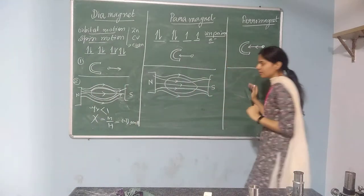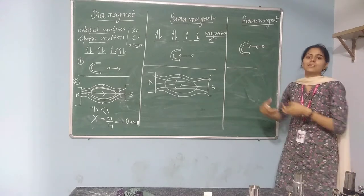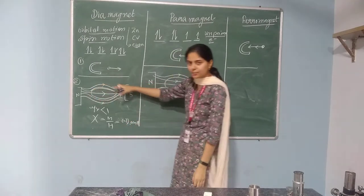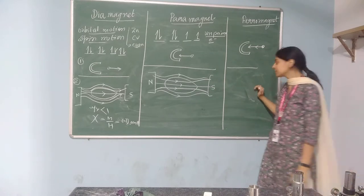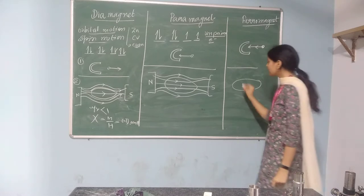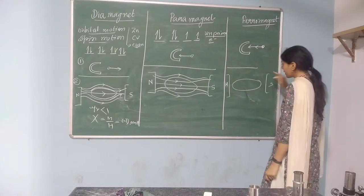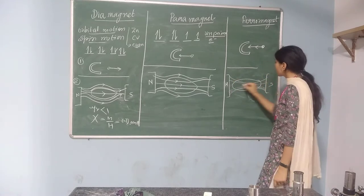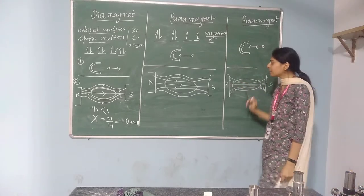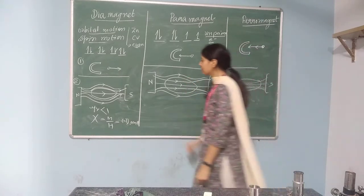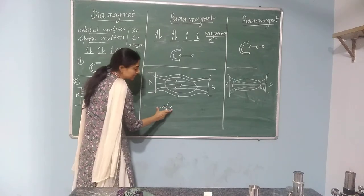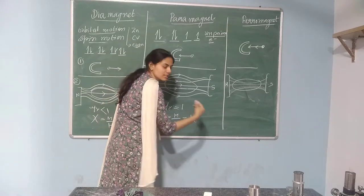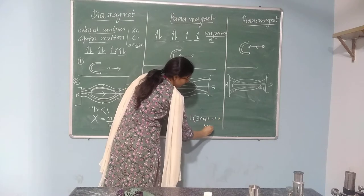In the ferromagnetic case, all the magnetic lines of force tend to crowd inside the material. For diamagnetic they avoid the material; for paramagnetic they pass through weakly; for ferromagnetic they get crowded inside the material. Since ferromagnetic is strongly attracted towards the magnetic field, all the lines are crowded inside. That is why the permeability is equivalent to 1 — actually a small positive value — and the susceptibility M/H is also a small positive value.